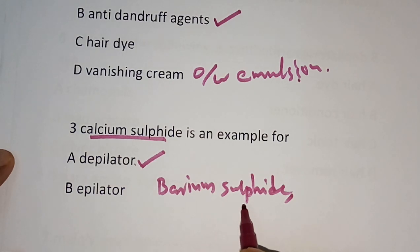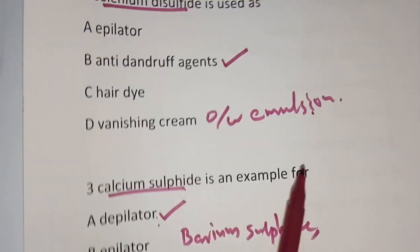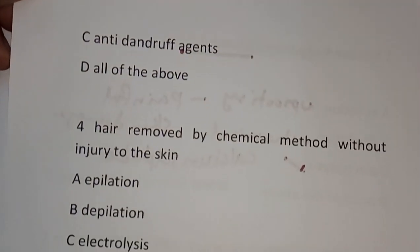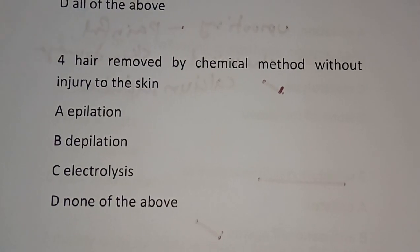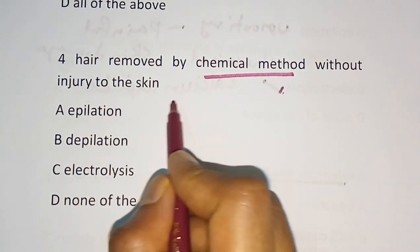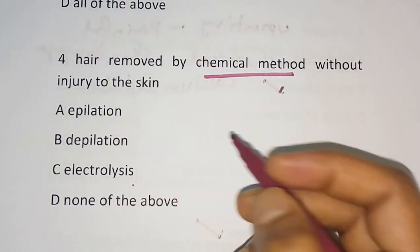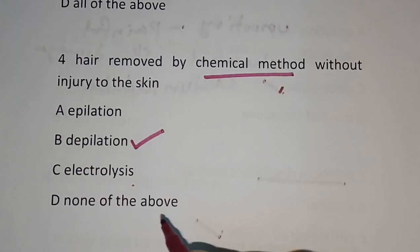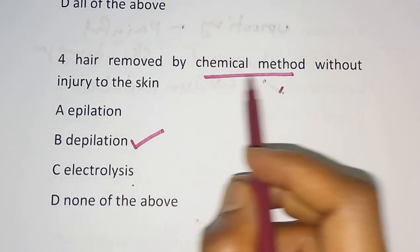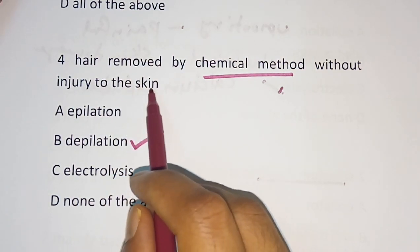Barium sulfide, calcium thioglycerol, and calcium thioglycolate are also examples of depilators. Question number 4: Hair removed by chemical method without injury to the skin — Epilation, Depilation, Electrolysis, or None of the above? The correct answer is Depilation. Depilation is the chemical method with no injury to the skin.